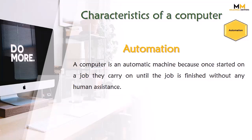A computer is an automatic machine because once started on a job, it carries on until the job is finished without any human assistance. Automation is also a special feature of a computer. On a computer, we can automate routine tasks with the help of a task scheduler. For example, we can scan our computer for viruses or perform any other maintenance tasks at a particular scheduled time. The computer will perform the task on the given schedule.